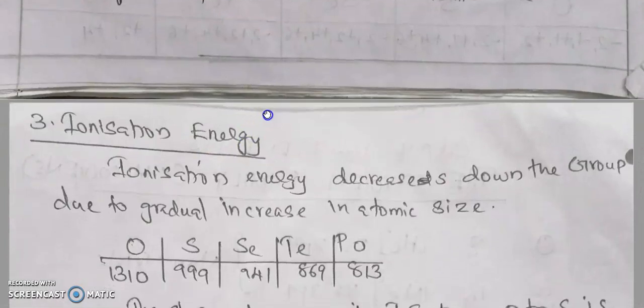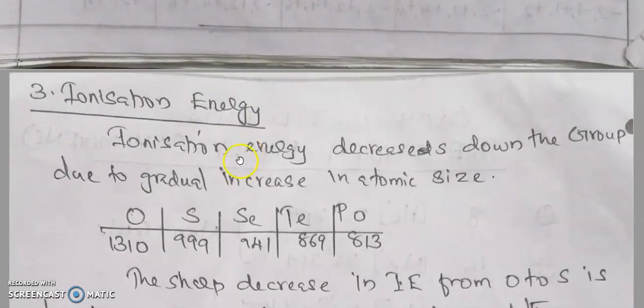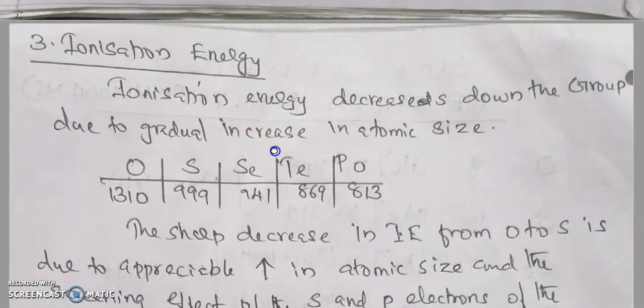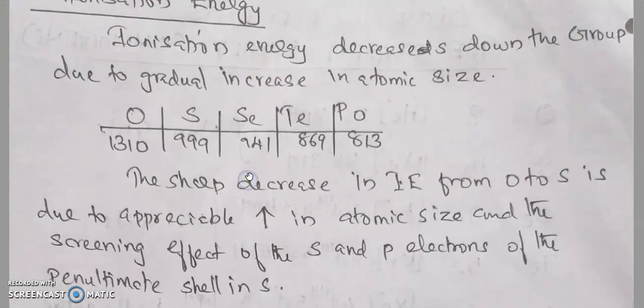Ionization energy decreases down the group due to gradually increasing atomic size. Oxygen has an ionization energy of 1310 kJ/mol, while polonium has 813 kJ/mol. The sharp decrease in ionization energy from oxygen to sulfur is due to the appreciable increase in atomic size and the screening effect of s and p electrons of the penultimate shell in sulfur.